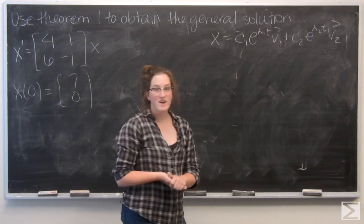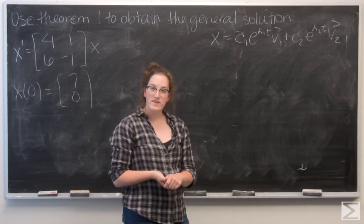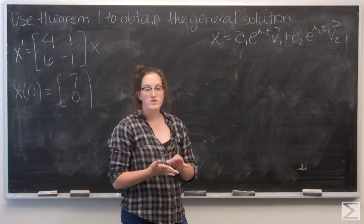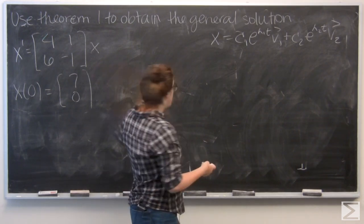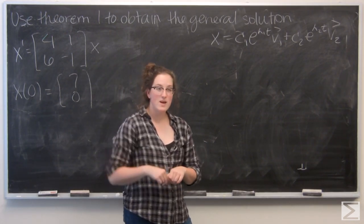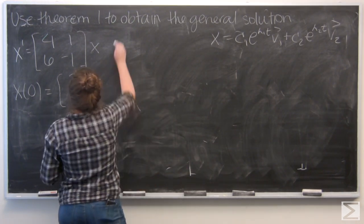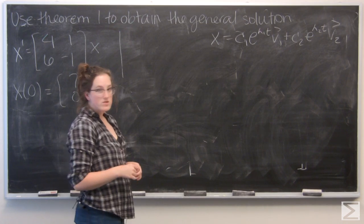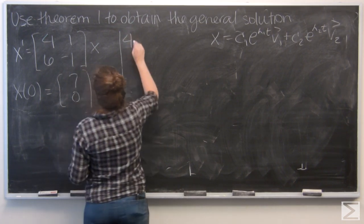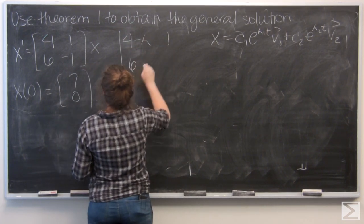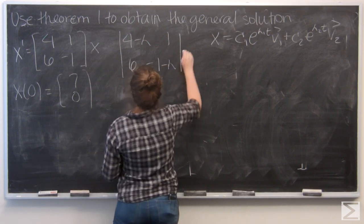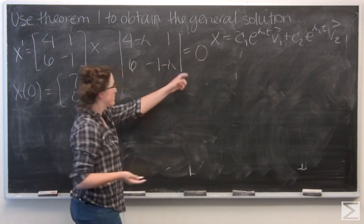So to get started, I need to find the eigenvalues for my given matrix. I'm going to take the determinant of that given matrix minus lambda times the identity matrix and set that equal to 0. So basically, I want to subtract lambda along the main diagonals and set that equal to 0.